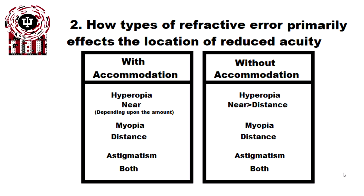Step two. How types of refractive error primarily affect the location of reduced acuity. So with the combination, we expect our hyperopia to have worse vision at near, so the acuity should be reduced depending upon the amount. Conversely, myopia is worse at distance, and astigmatism is worse at both. So if astigmatism is a half diopter, it's going to affect both distance and near equally.